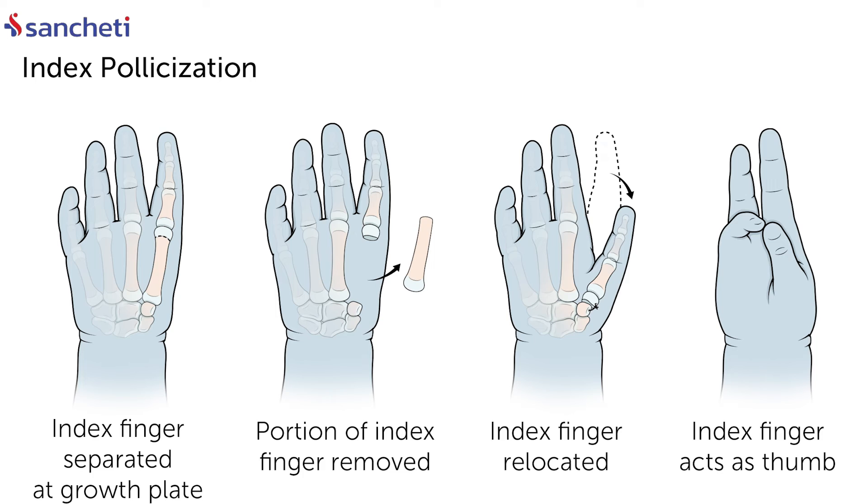Whenever we see absence of thumb, there's a procedure known as pollicization, in which we transfer the index finger to the position of the thumb. This is known as pollicization, and the index finger then acts as the thumb.